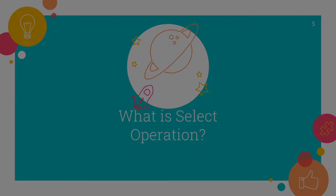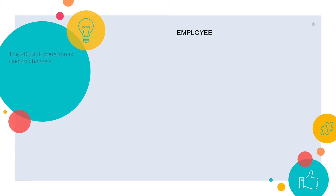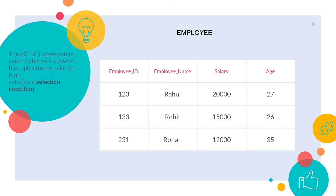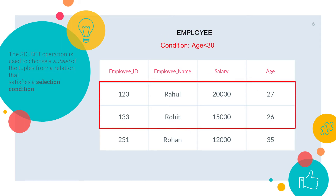First thing — what is the select operation? The select operation is used to choose a subset of the tuples from a relation that satisfies a selection condition. So basically, let's say we have a table called employee. Out of this entire table we want to select a subset of tuples that satisfies a selection condition. For example, let's say our condition is age is less than 30. There are only two employees — Rahul and Rohit — whose age is less than 30. So we select this subset of these two rows from the entire table.